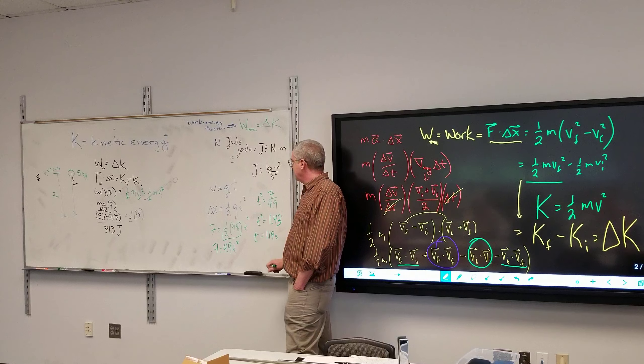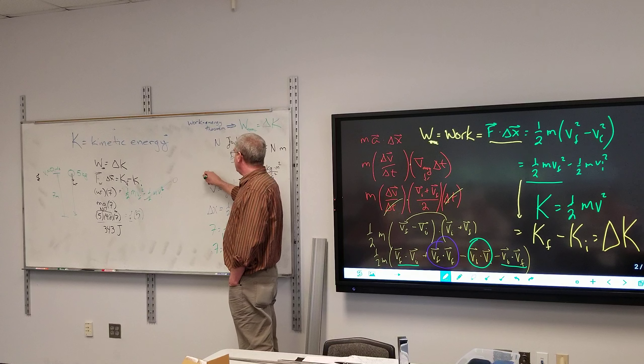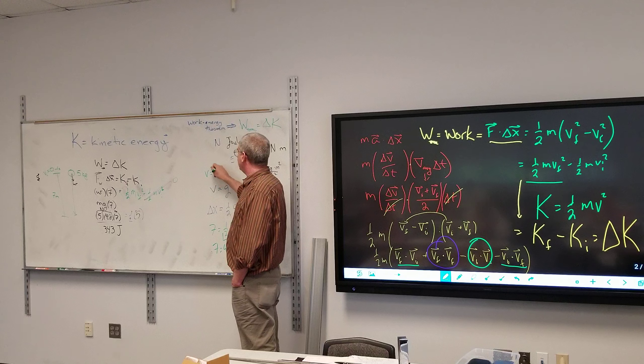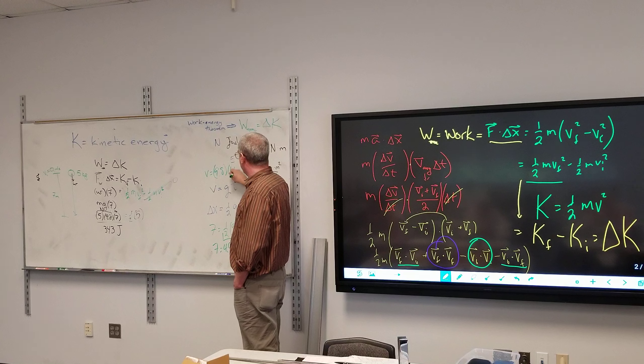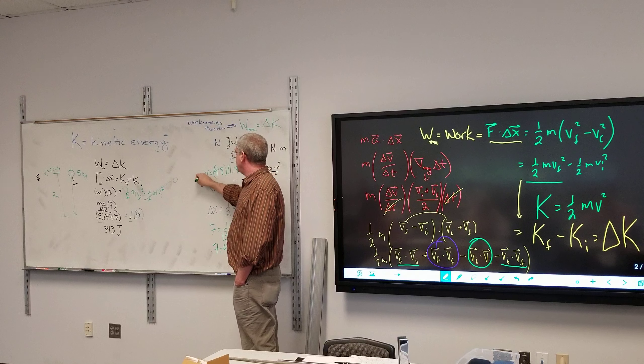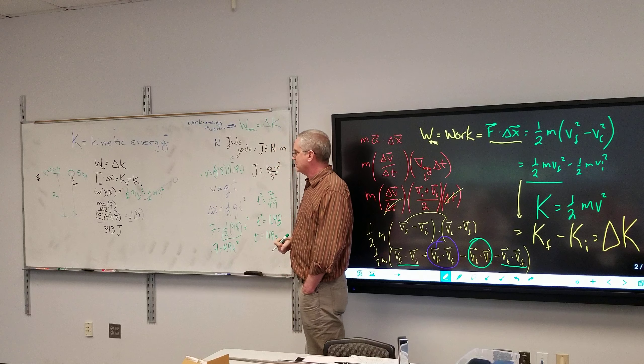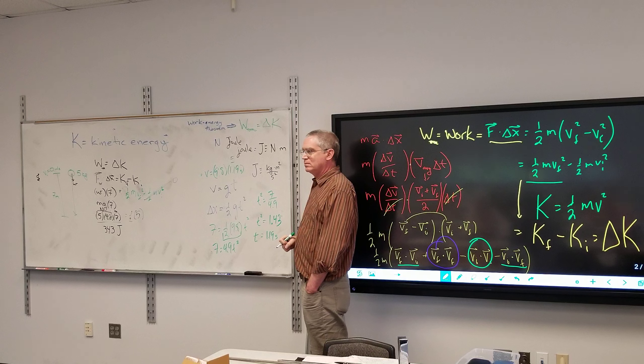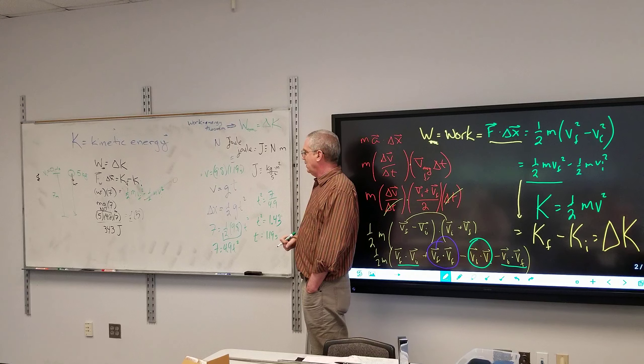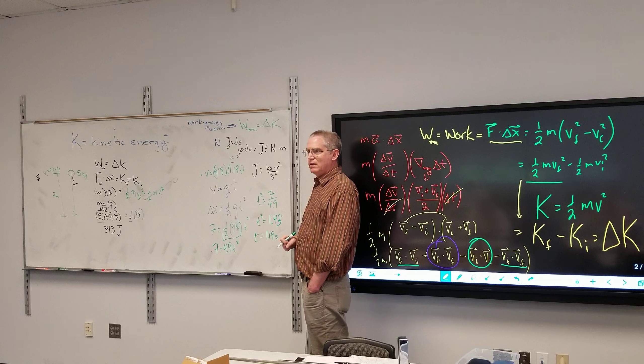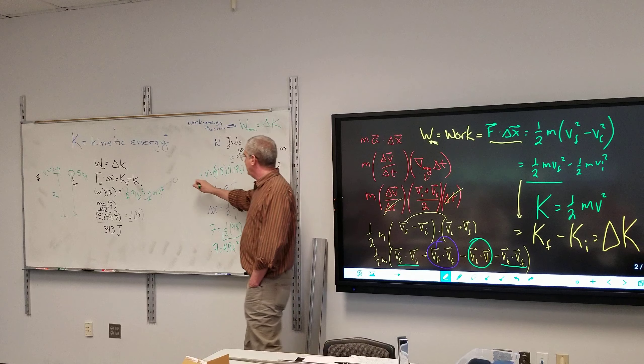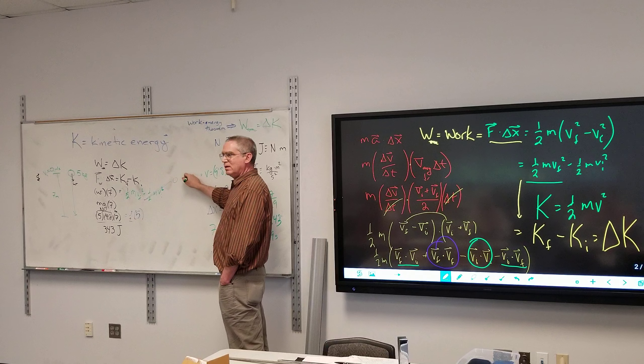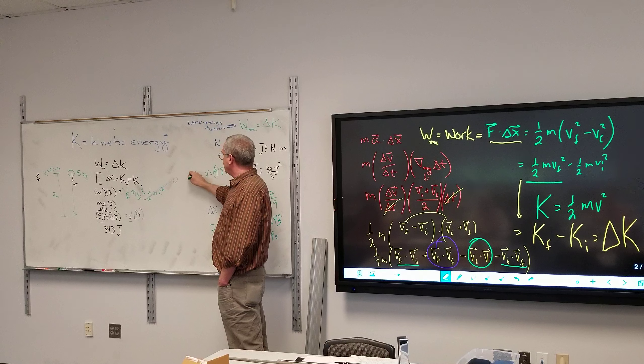So now I can plug into here. V is equal to nine point eight times that one point one nine seconds. And so what is the final speed? 11.662.